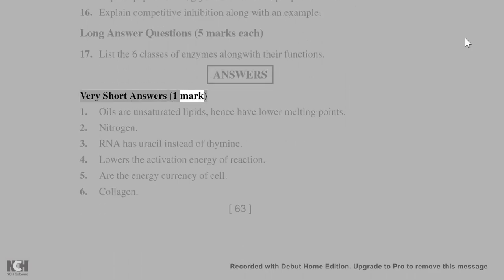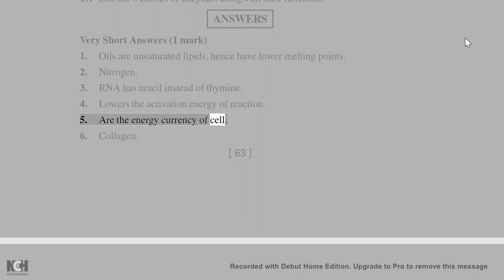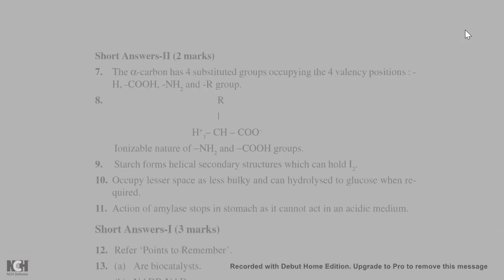Answers: Very short answers, one mark. 1. Oils are unsaturated lipids, hence have lower melting points. 2. Nitrogen. 3. RNA has uracil instead of thymine. 4. Lowers the activation energy of reaction. 5. Are the energy currency of cell. 6. Collagen. Short answers 2, two marks. 7. The alpha carbon has four substituted groups occupying the four valency positions: H, COOH, NH2 and R group. 8. RH3+CH COO- ionizable nature of NH2 and COOH groups. 9. Starch forms helical secondary structures which can hold I2. 10. Occupy lesser space as less bulky and can hydrolyze to glucose when required.